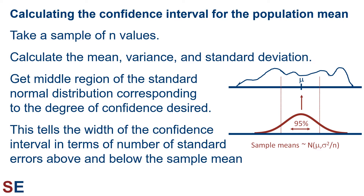If we want to be 95% confident of where the population mean is, we want to know how many standard deviations wide the middle 95% of the standard normal distribution is. If we wanted to be 99% confident, we would want the middle 99% of the standard normal distribution in terms of standard deviations. Standard deviations within our distribution of sample means are really standard errors. Therefore, the width of this region in the standard normal distribution tells us the width of the confidence interval in terms of the number of standard errors above and below the sample mean.